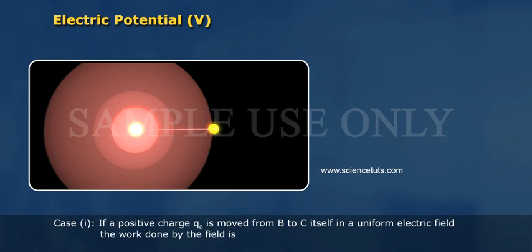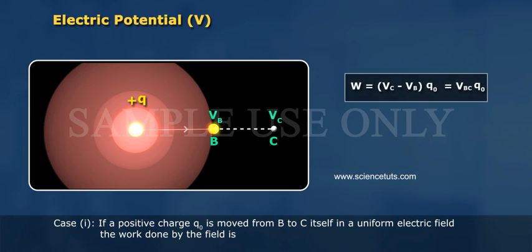Case 1: If a positive charge Q naught is moved from B to C in a uniform electric field, then work done by the field is W is equal to VC minus VB Q naught is equal to VBC Q naught. Therefore VBC is equal to W by Q naught.